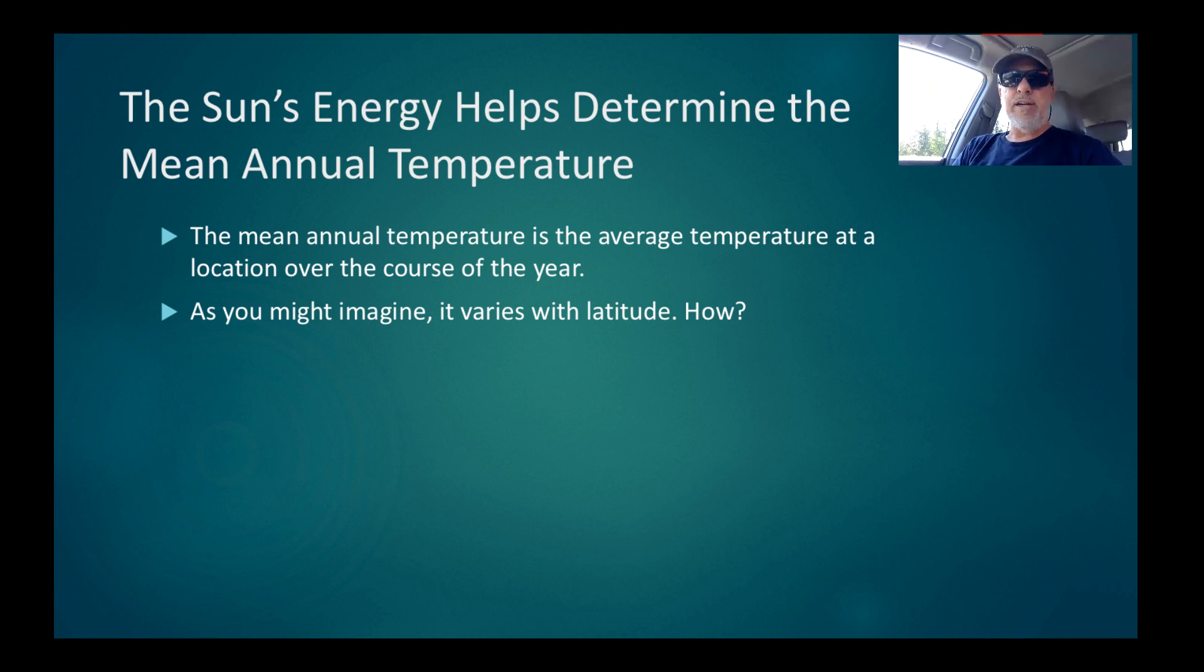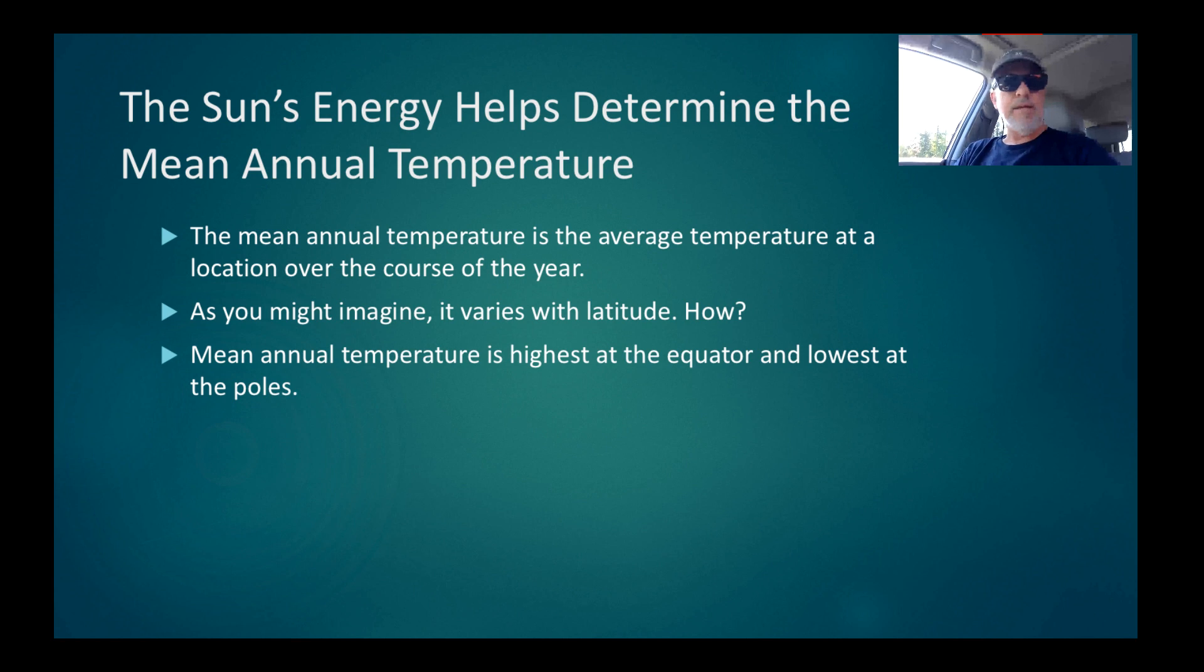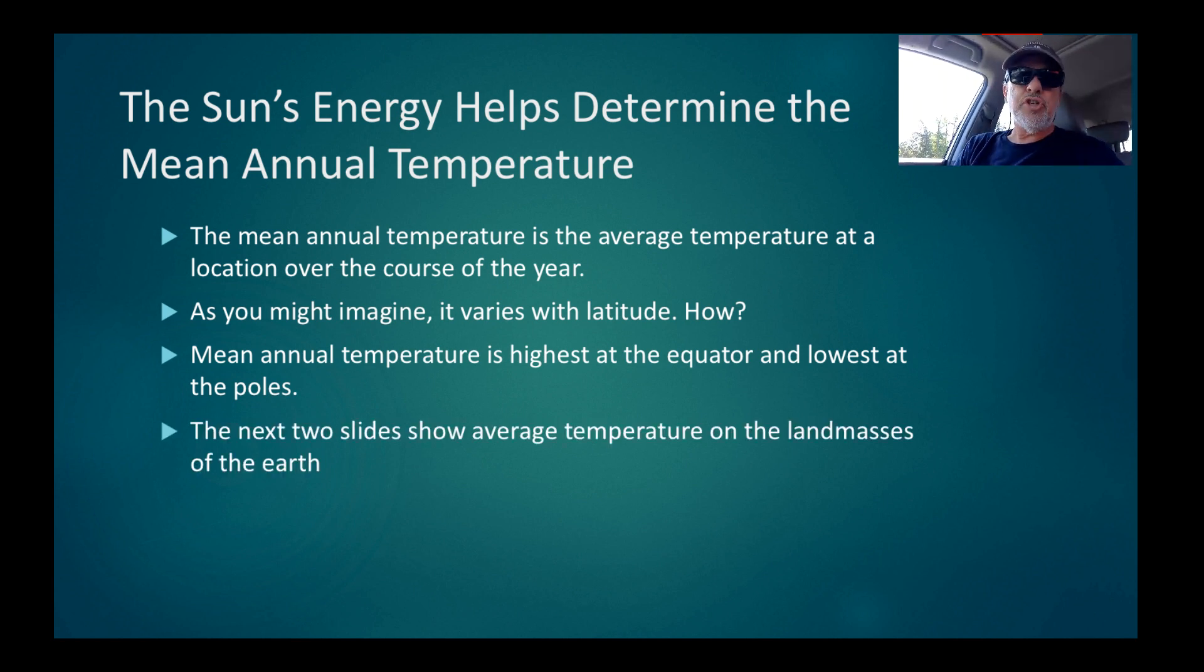The mean annual temperature is the average temperature at a location over the course of a year. As you might imagine, it varies with latitude. Mean annual temperature is highest at the equator and lowest at the poles. That makes sense, I'm sure to you.